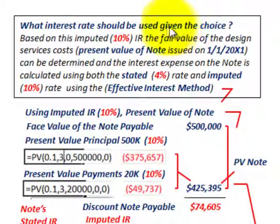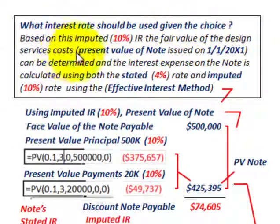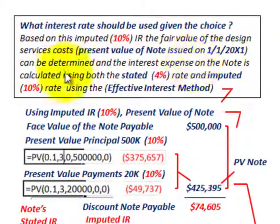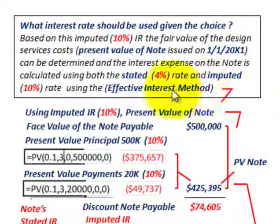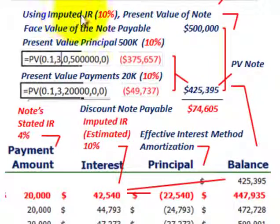Based on the imputed 10% interest rate, the fair value of the design service costs — that is, the present value of the note issued in 20X1 — can be determined. The interest expense on the note is calculated using both the stated interest rate of 4% and the imputed 10% interest rate. We're going to use the effective interest method for amortizing this note, using the imputed rate of 10% to determine the present value of the note.